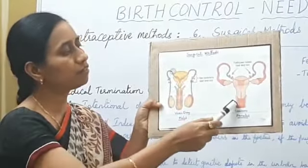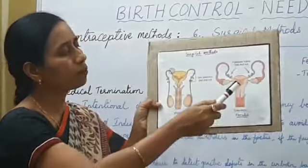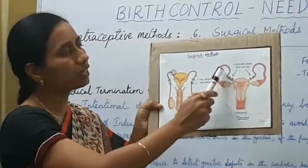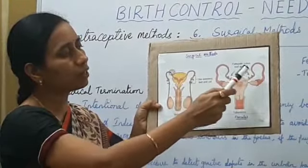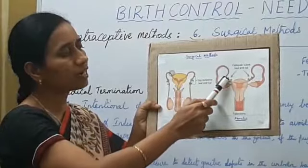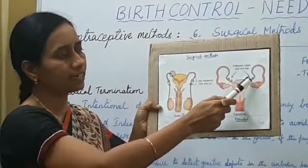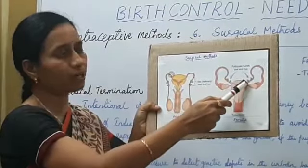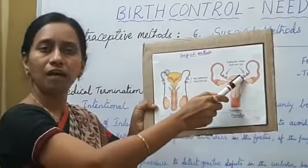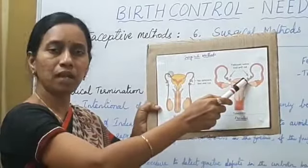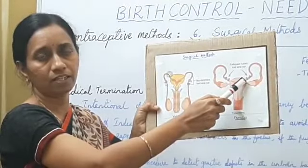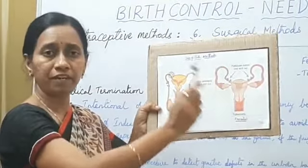If you come to the female's body, here in tubectomy, the two sides of the fallopian tubes are cut and tied, so that the ova may not enter into the fallopian tube's last part, and so that the pregnancy is prevented.